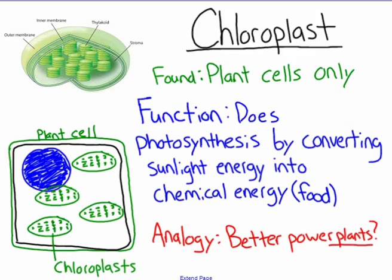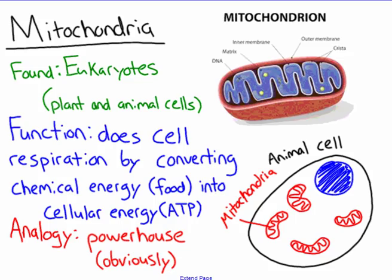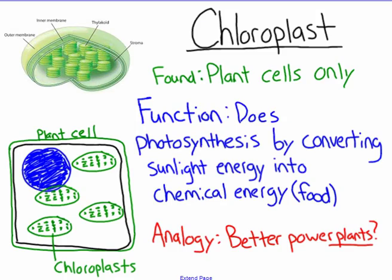The mitochondria cannot do what it does without the chloroplasts. The mitochondria converts chemical energy into cellular energy, but the chloroplasts converts sunlight energy into chemical energy — which is our food. So in order for the mitochondria to even function, it needs something creating the food. Animal cells do not have chloroplasts — this is only found in plant cells.